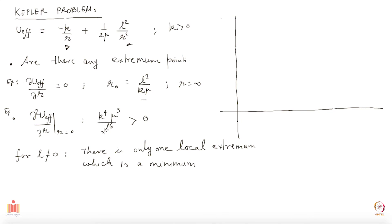Before drawing, let me give you one more result: U_effective at r naught equals minus k-squared mu over 2 L-squared, which is negative. So now I know quite a lot about the shape of the graph.